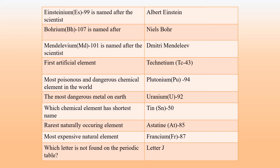The first artificial element is Technetium. Its symbol is Tc and the atomic number is 43. The most poisonous and dangerous chemical element in the world is Plutonium. The most dangerous metal on Earth is Uranium.